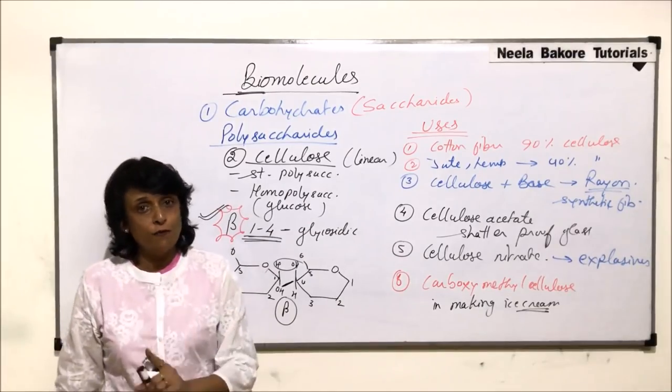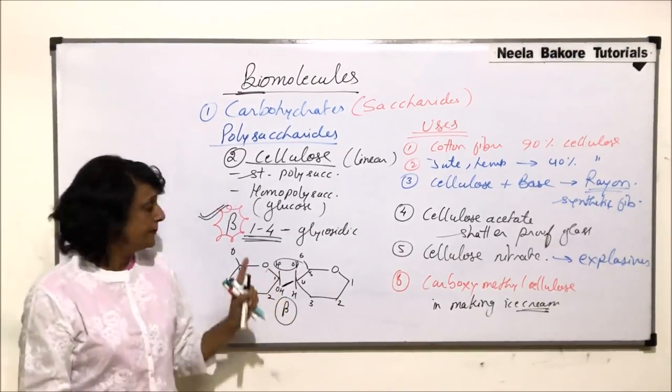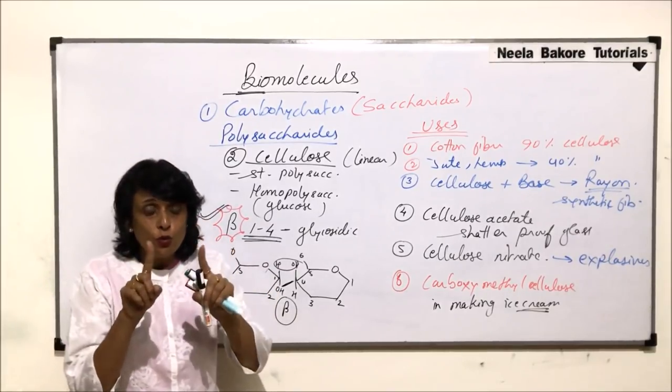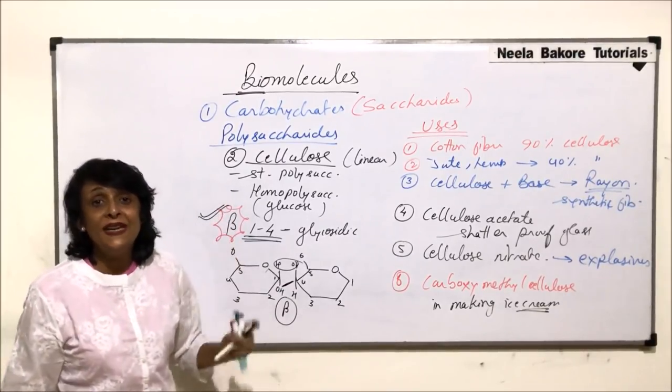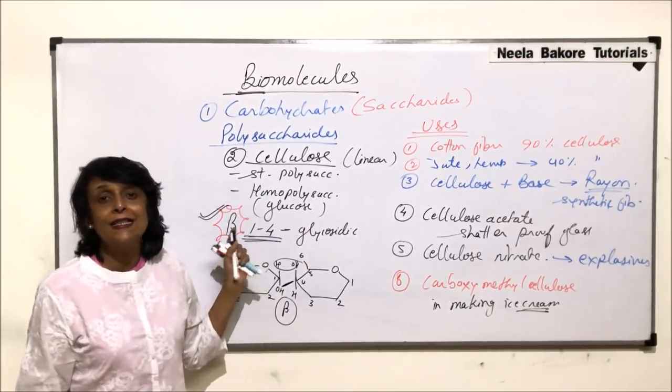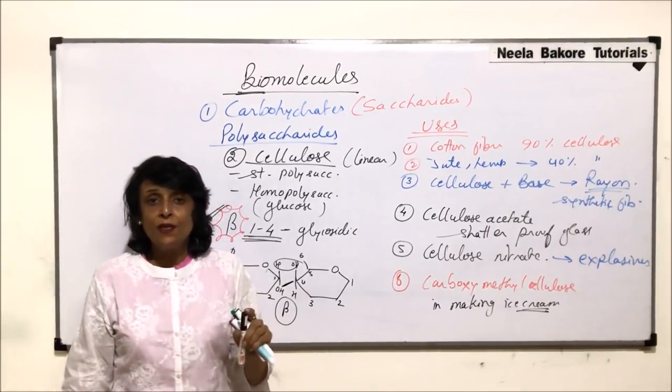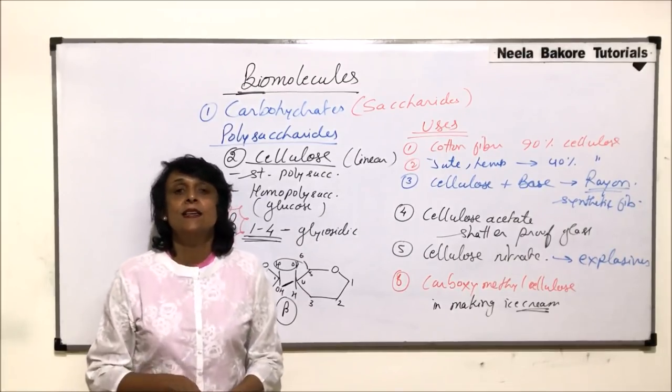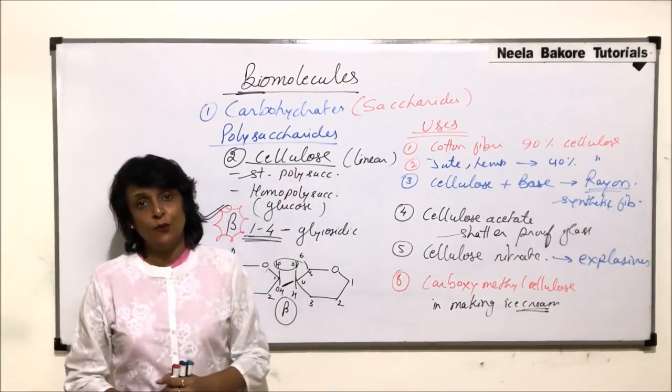Most important thing that we have to remember here is the bond is 1,4. 1,4 bond means it is a linear structure. But because of different orientation of functional groups on the two carbons which are making the bond, the bond which is formed is a beta glycosidic bond. To break such kind of a bond, the enzymes required are beta amylases, and animals do not produce such kind of an enzyme. So they need certain symbiotic organisms to help in digestion of cellulose.